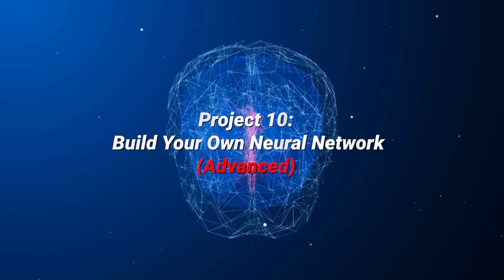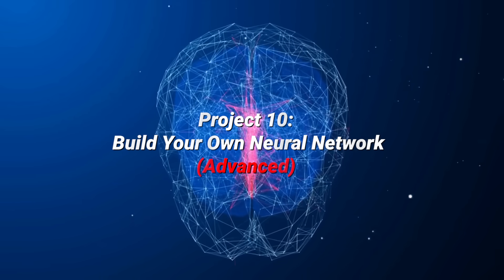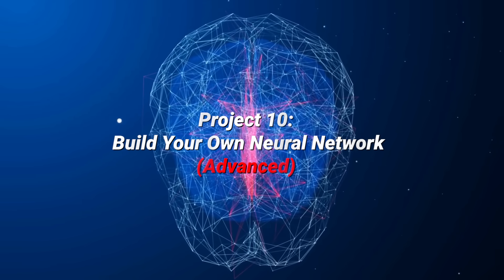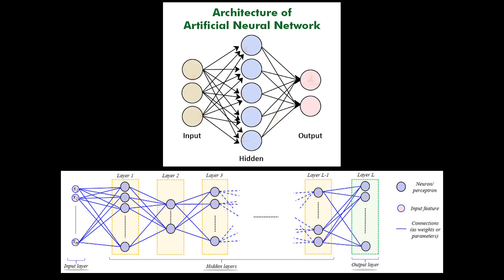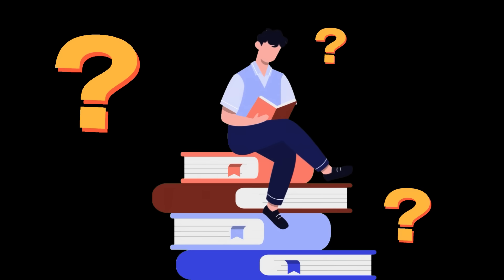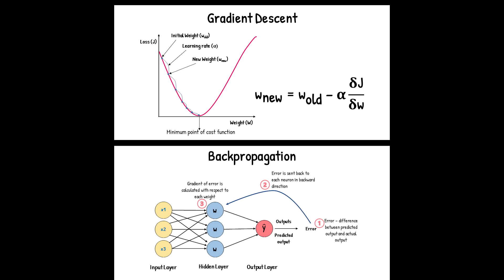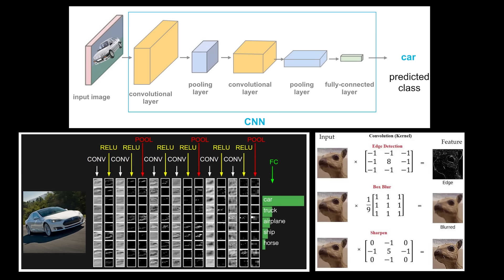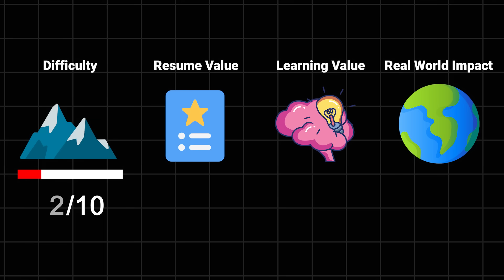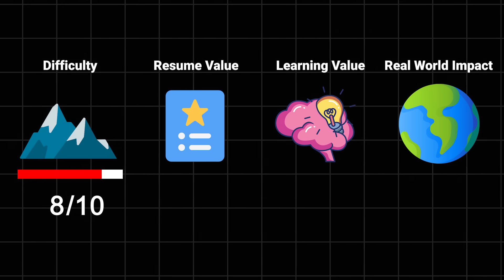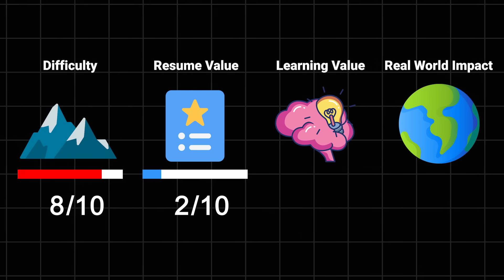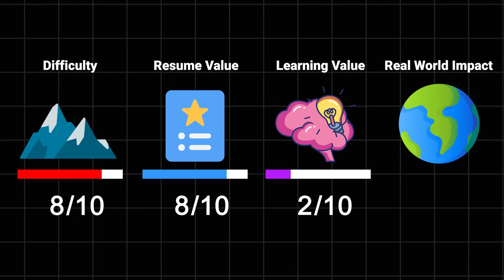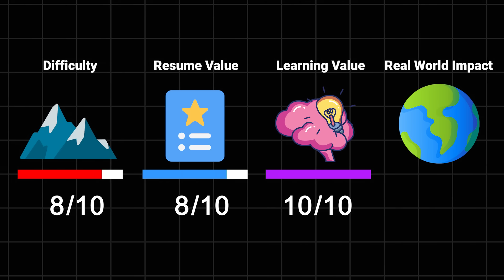Build your own neural network. This is where things get spicy. No TensorFlow, no PyTorch - we're building this bad boy from scratch. You'll finally understand what's actually happening in all those fancy AI papers you've been pretending to read. You'll implement backpropagation - yes, with all the math - create different layer types, and probably debug matrix dimensions for hours. But trust me, it's worth it. Difficulty: 8 out of 10. The math is fun. Resume value: 8 out of 10. Learning value: 10 out of 10 because you'll actually understand deep learning. And impact: 8 out of 10. Two points off because your mom won't care.